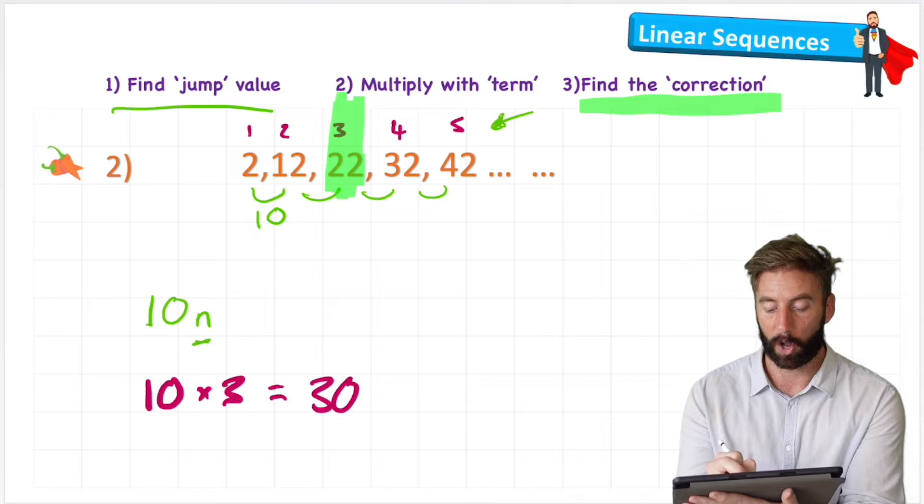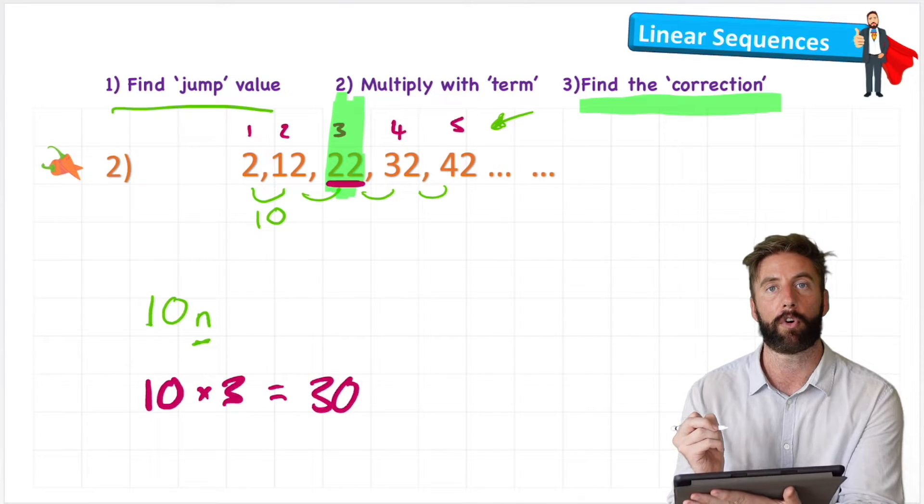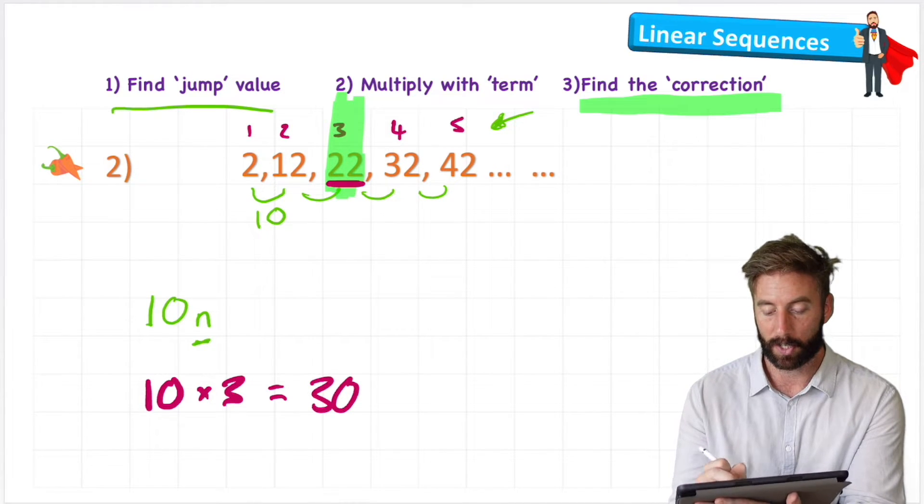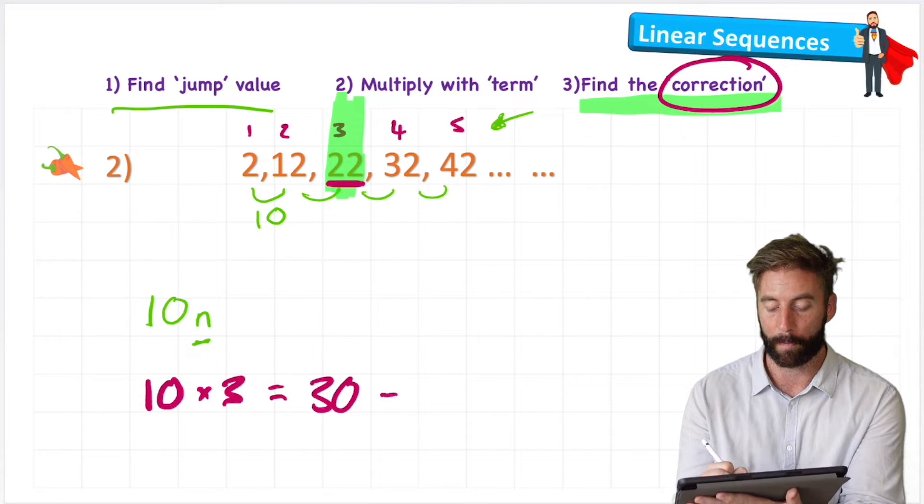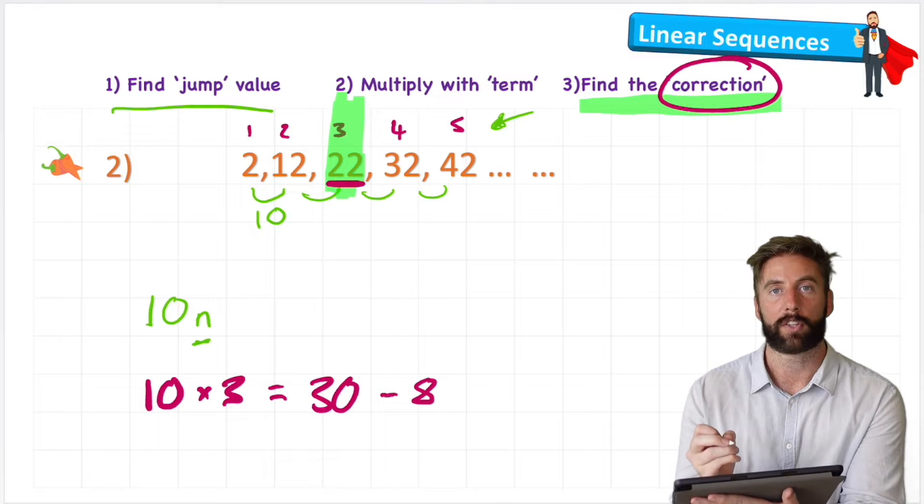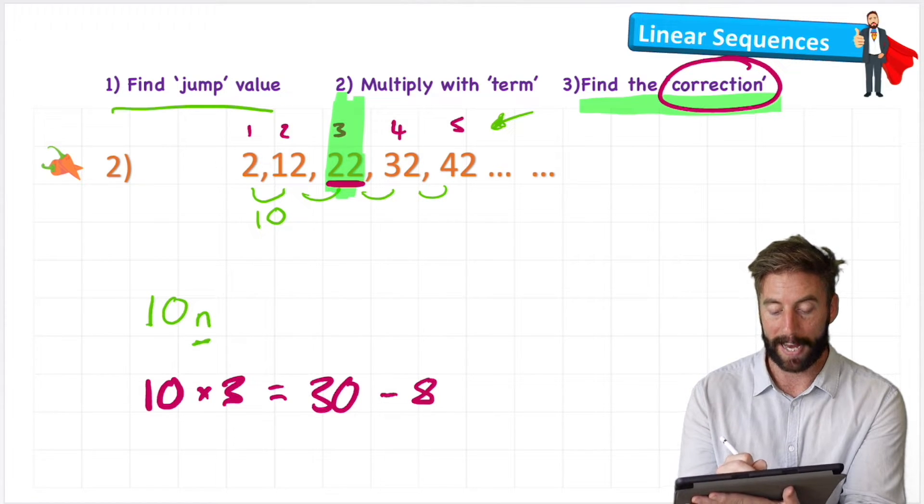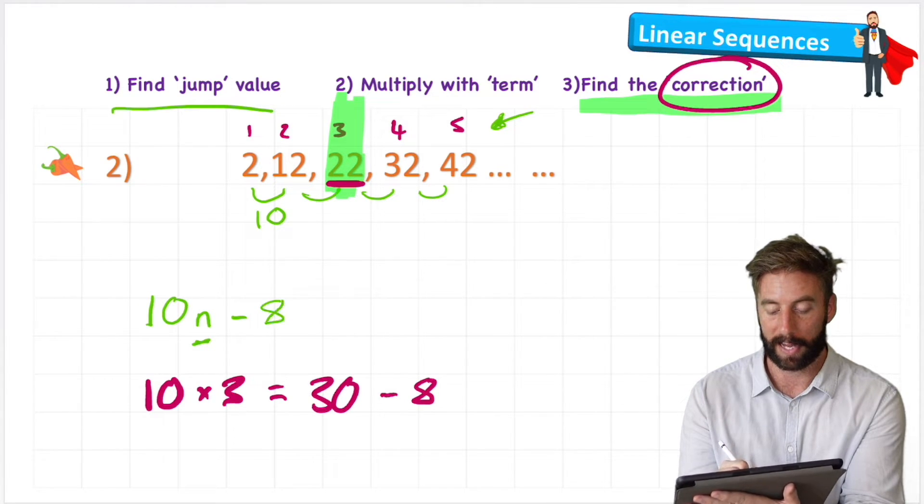Well, 30 is close to the 22 that I'm looking for, but not right. So how can I correct from 30 down to 22? I would need to minus 8. So therefore, my formula should be 10n minus 8.